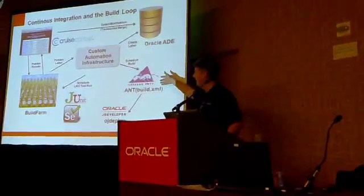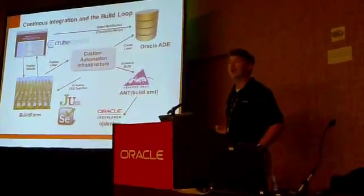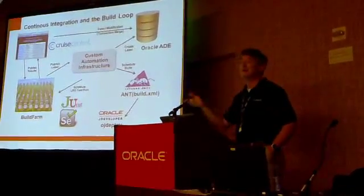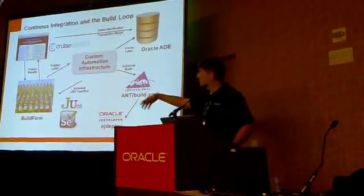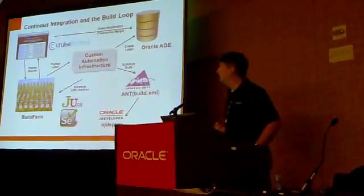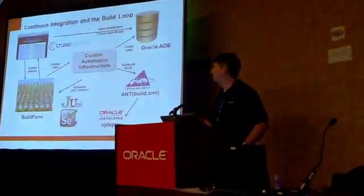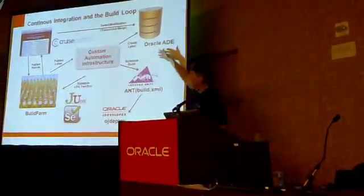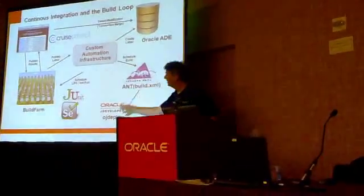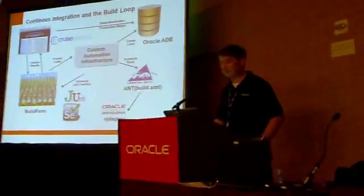For doing builds they use Apache Ant, integrating with a tool called OJ Deploy — supplied with JDeveloper — which allows you to take JDeveloper deployment profiles and deploy them from the command line or as part of an Ant script. For scheduled tests they use JUnit and Selenium for automated UI testing, running on a giant farm of machines. Cruise Control, a free continuous build solution, triggers a build as soon as a developer checks in, creates a label of all their files, schedules a build, does deployment, and updates a portal page with whether the build succeeded or failed.